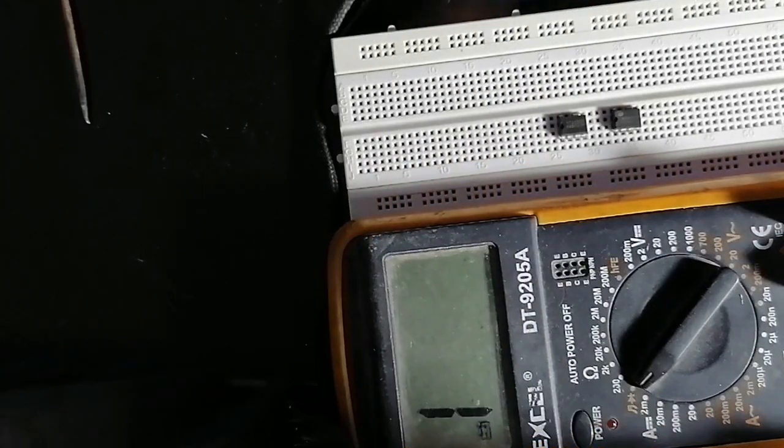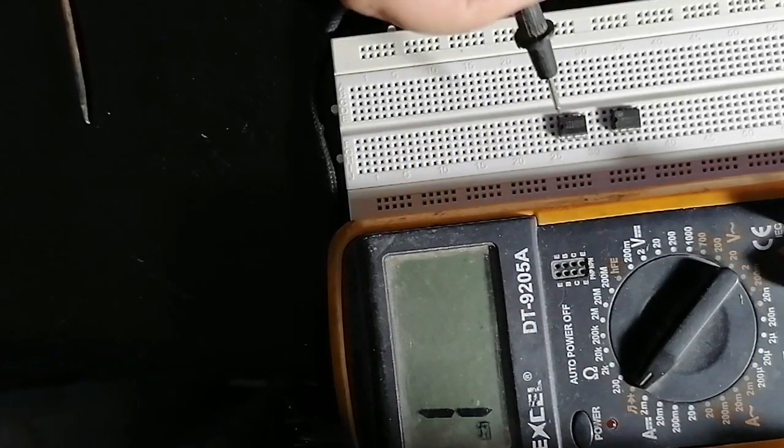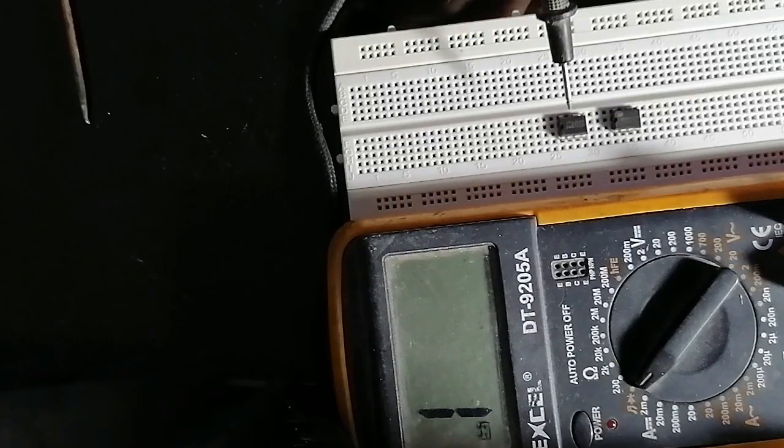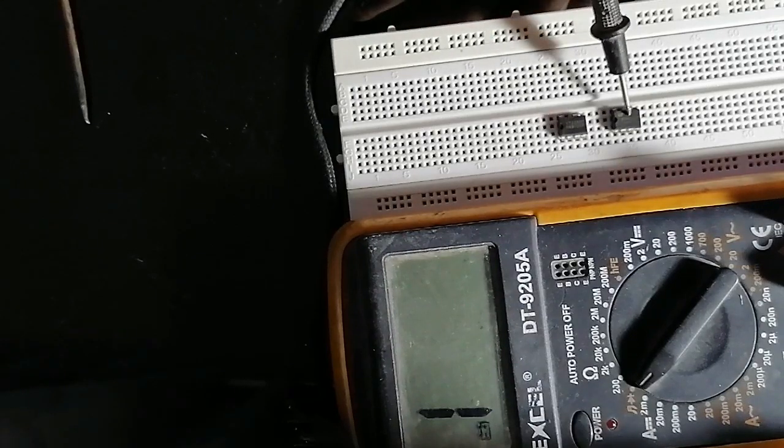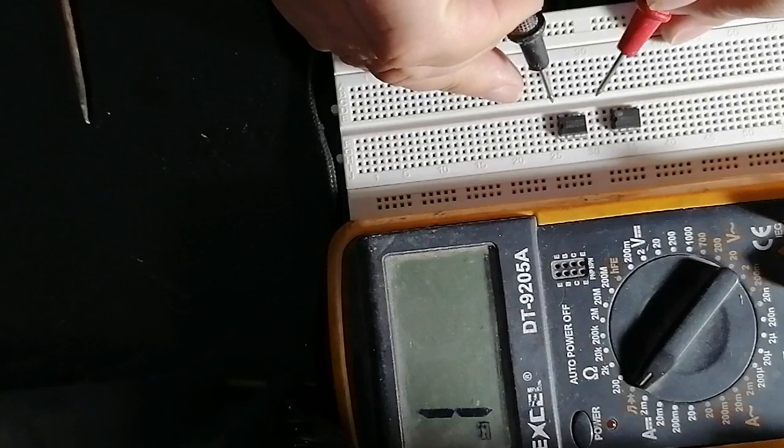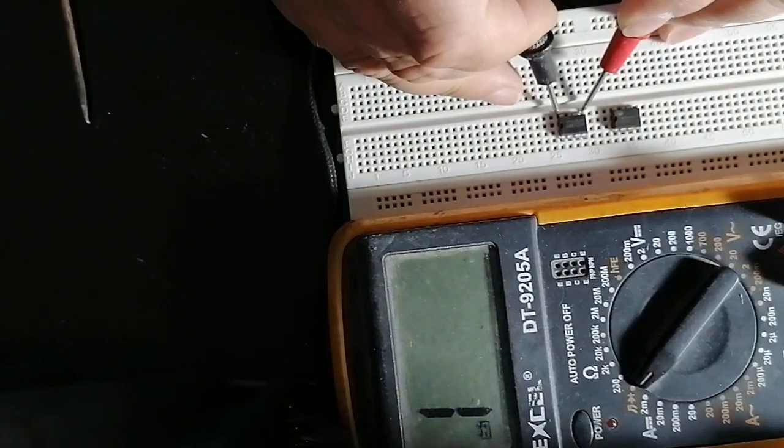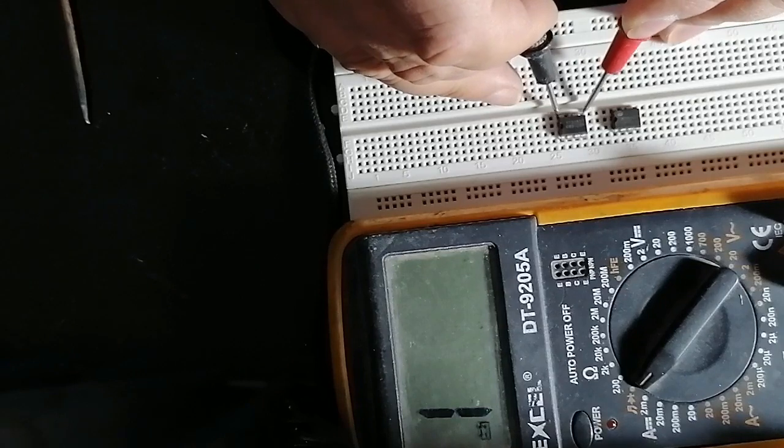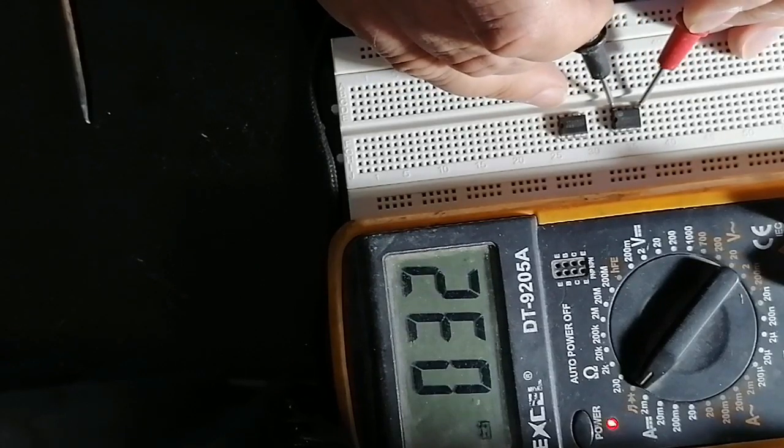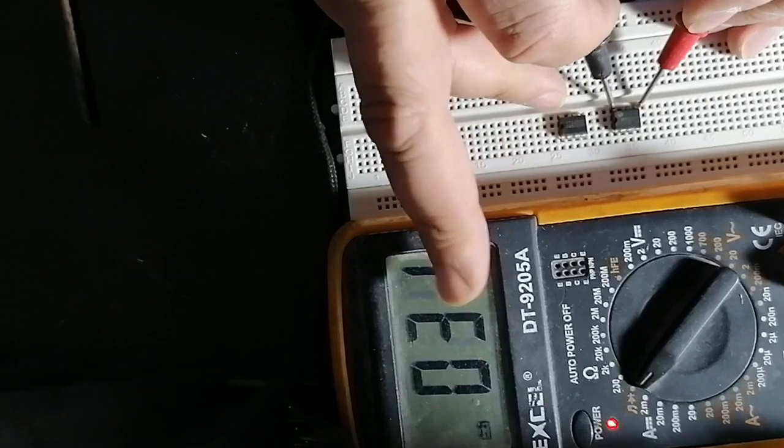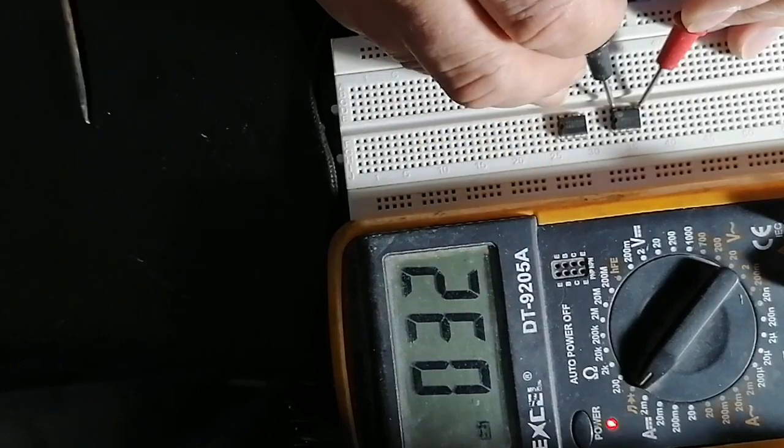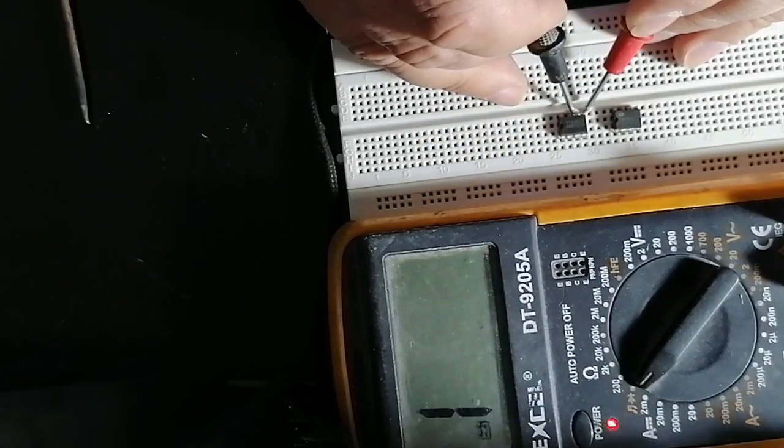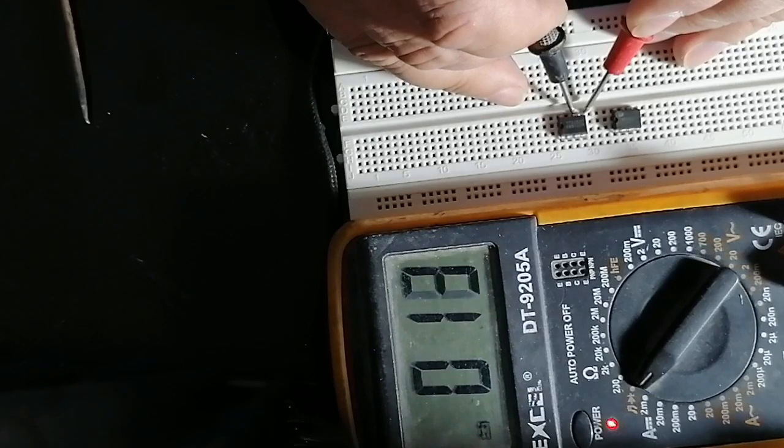I'll check these two ICs, eight pins. This is the new one and this is the old one. I check the reading between this pin and this pin. There is no reading. I compare with the old one. It's reading short. Okay, I continue. These two pins, short.